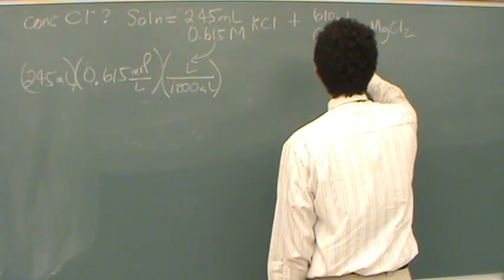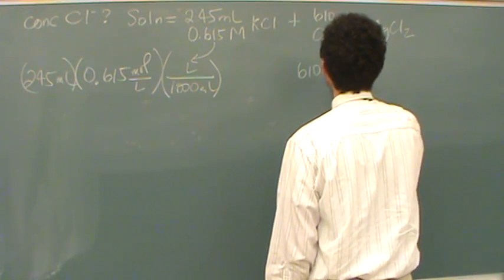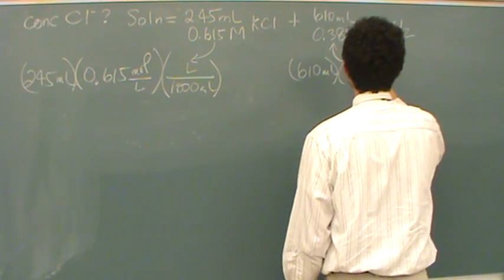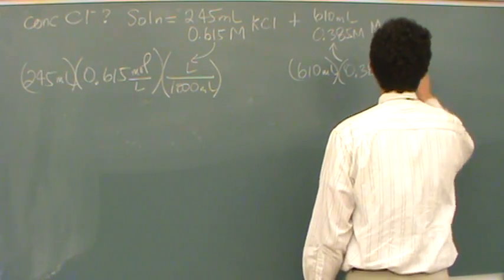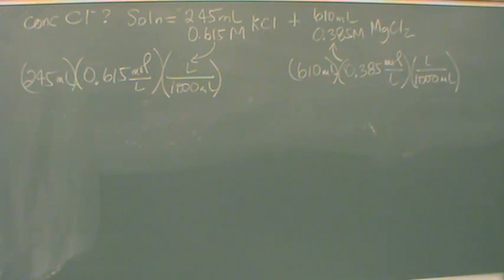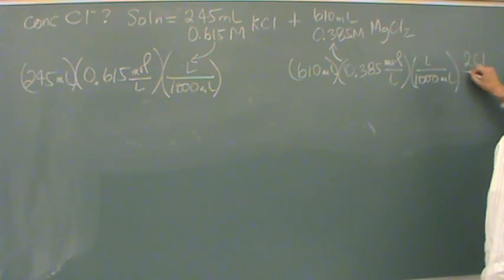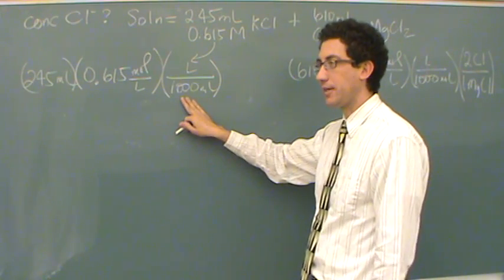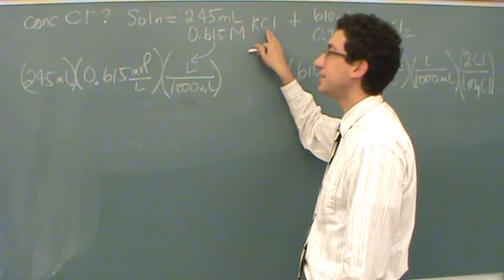Now from this one, it'll be a little more tricky. 610 milliliters, and then multiply by the molarity again and convert the volumes. But this is going to be the molarity of MgCl₂, and there are two chlorines in every MgCl₂, so we've got to multiply this by two. So there are two Cl for every one MgCl₂, and that could be written as a molar ratio.